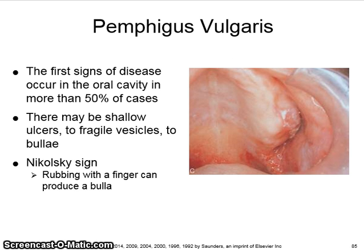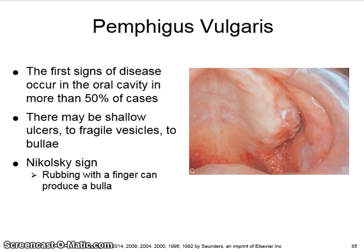Pemphigus vulgaris is a severe, progressive autoimmune disease that affects both the skin and mucous membranes. It is characterized by intraepithelial vesicle formation that results from the breakdown of the cellular adhesion between epithelial cells. This type of epithelial cell separation is called acantholysis.